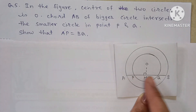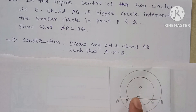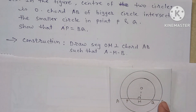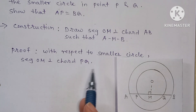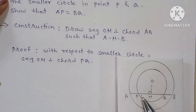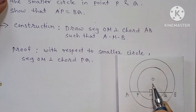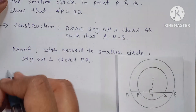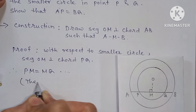Construction: draw segment OM perpendicular to chord AB. Now, with respect to the smaller circle, segment OM is also perpendicular to chord PQ. Since the perpendicular from the center bisects the chord, for the smaller circle: PM = MQ. This is equation number 1.